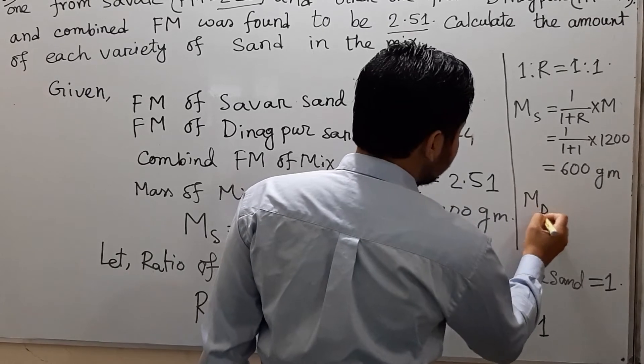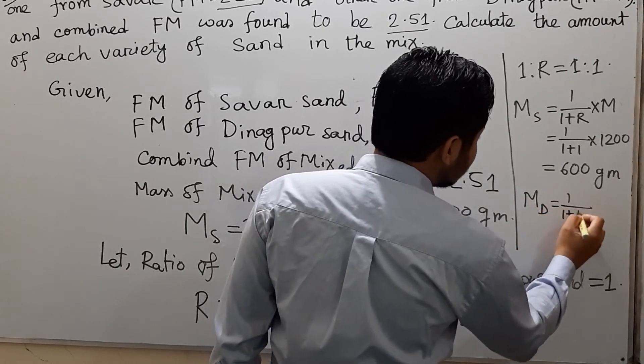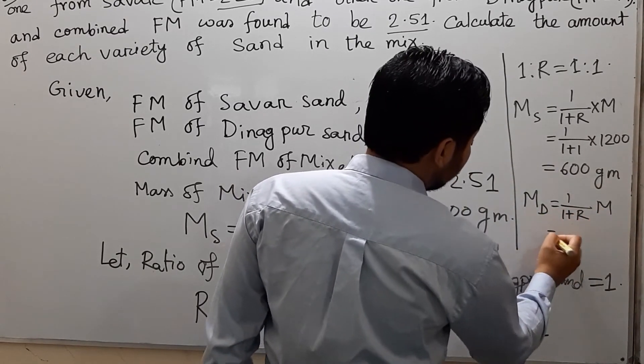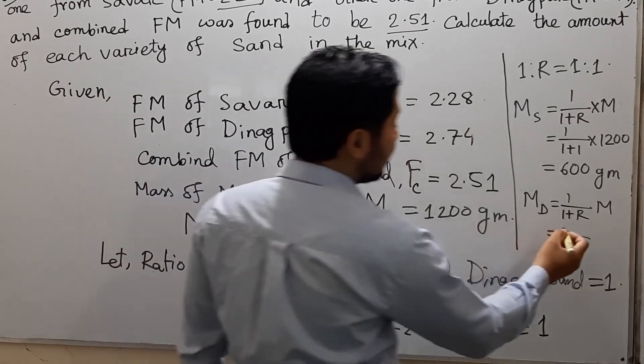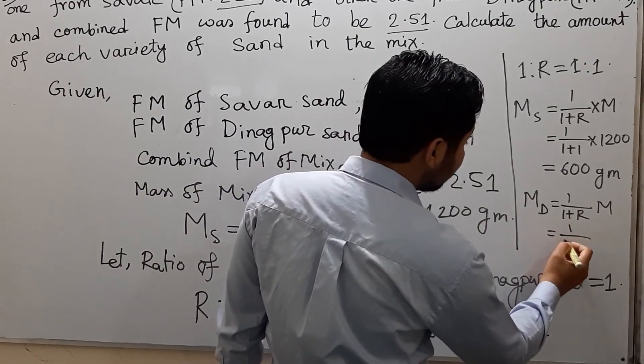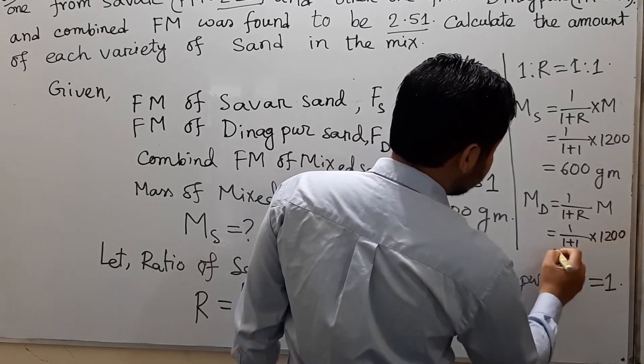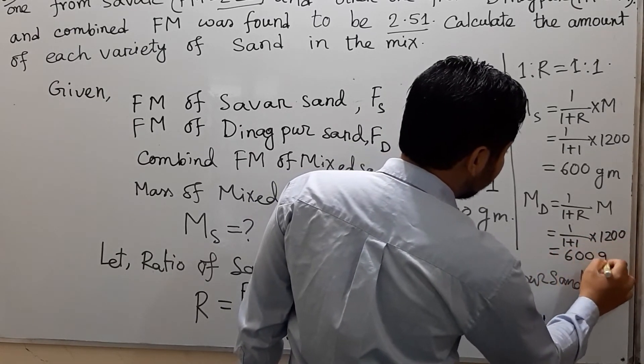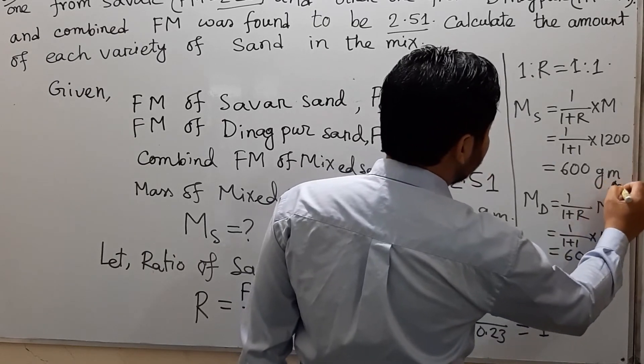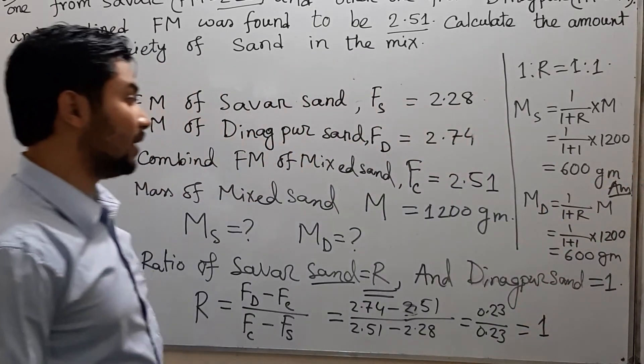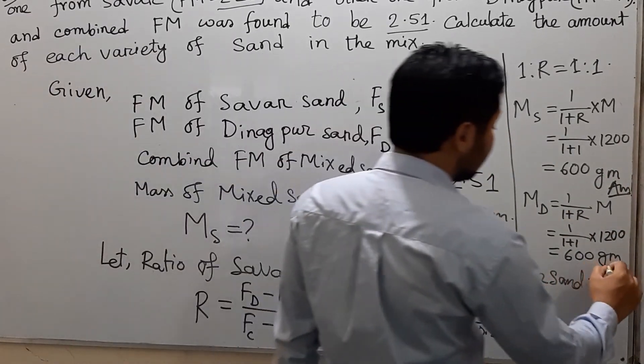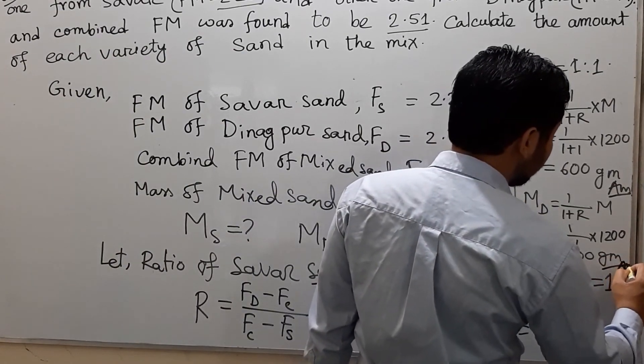Md equals 1 divided by 1 plus R times total M, which is 1 divided by 1 plus 1 times 1200, which is 600 grams.